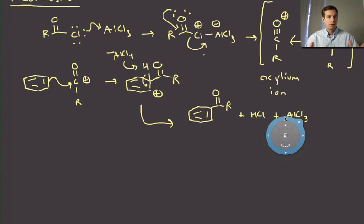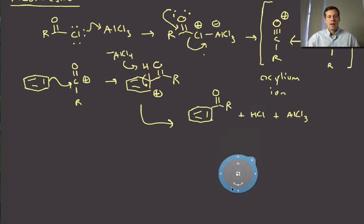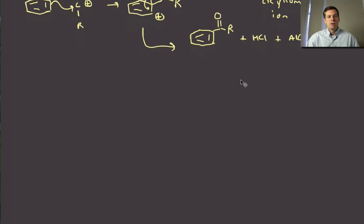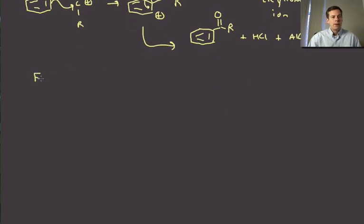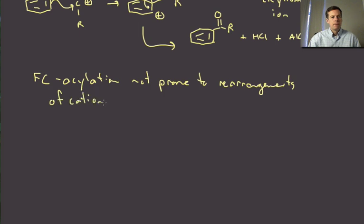This acylium ion is an intermediate that is very reactive but it's not prone to undergo any of those rearrangements that we saw with the alkyl carbocations. Okay so that then makes the Friedel-Crafts relatively well behaved. So the Friedel-Crafts acylation is not prone to rearrangements of the cationic intermediates.